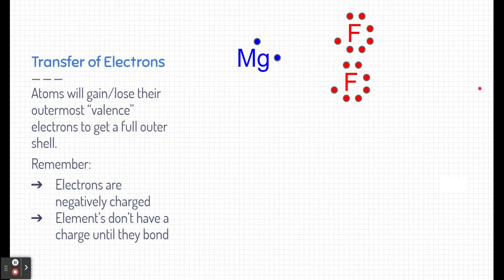Electrons are negatively charged. That's important. When we talk about transferring electrons, we need to understand it in terms of moving, either receiving or losing negative charge. One thing to also note, elements do not have a charge until they bond.